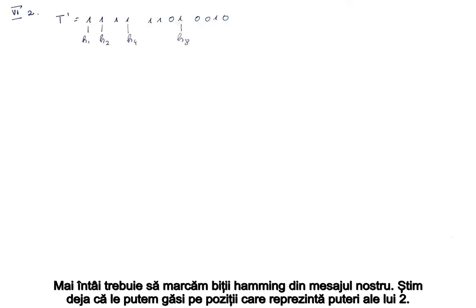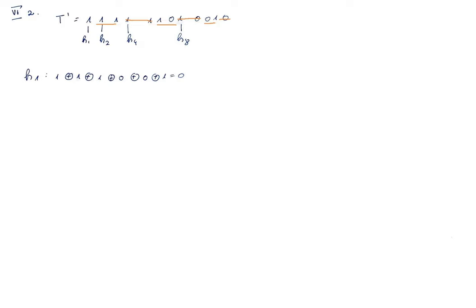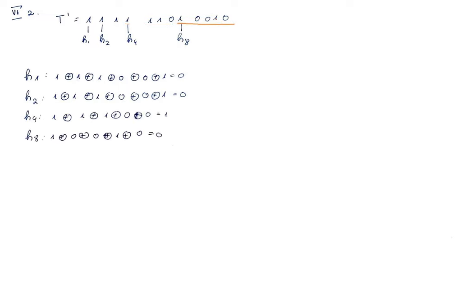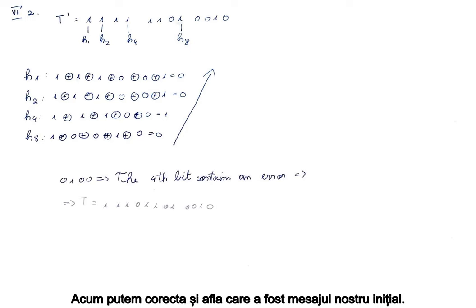We first need to mark out the Hamming bits in our message. We already know that we can find them on positions that represent powers of 2. To check if there were any errors during transmission, we have to do similar modulo 2 additions as before. Because the result isn't 0, that means there was an error. We can find the error on the bit with position 0100, or on the 4th bit. Now we can correct and find out what our initial message was.